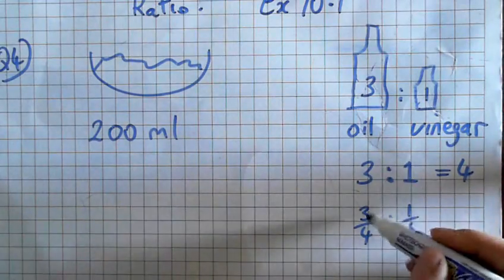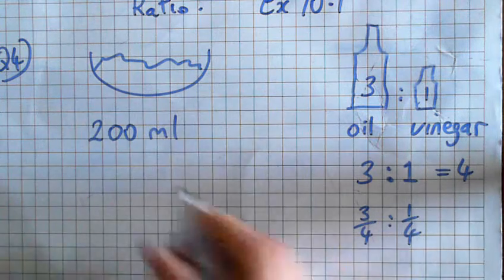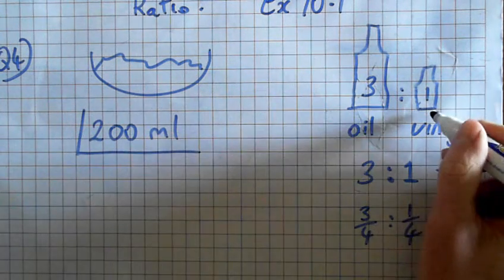Right, so then all we have to do is get 3 quarters of 200 to find the oil. If we get 1 quarter, we'll find how much vinegar there is.